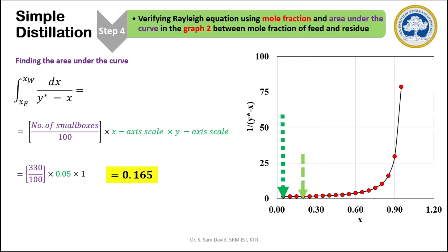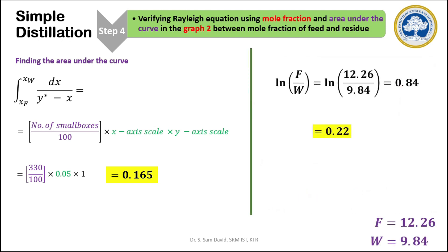After plotting the graph and marking the XF and XW vertical lines, we count the number of small boxes under this region. In this particular diagram, the number of boxes comes to be 330, with the x-axis scale of 0.05 per centimeter and the y-axis scale of 1 unit per centimeter. On calculating the value, the right-hand side comes to be 0.165. For the left-hand side of the equation, F is 12.26 and W is 9.84, which gives a value of 0.22. We can see that the left-hand side and right-hand side of the Rayleigh equation are similar, thus verifying the equation experimentally.